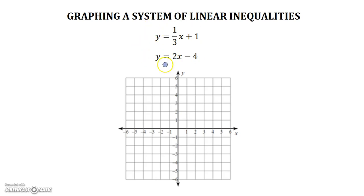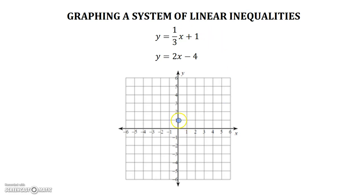You have a system of equations — more than one equation. So let's go ahead and graph them. We have y equals one-third x plus one. Y-intercept at one, our slope is one-third, so up one over three, up one over three, and in the opposite direction.